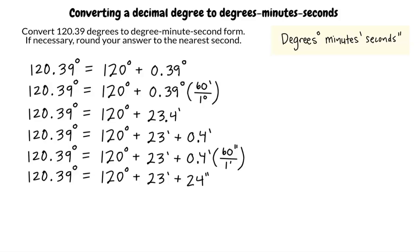If you get a decimal for seconds, then you round to the nearest whole number. So if we got 24.5, we would have rounded to 25? Exactly.